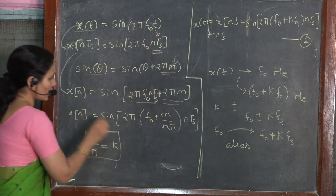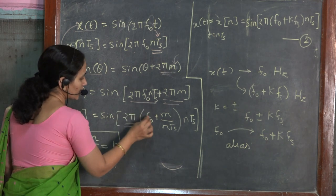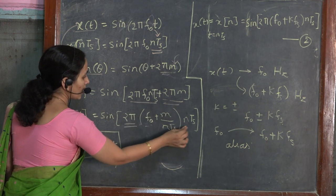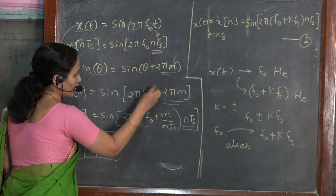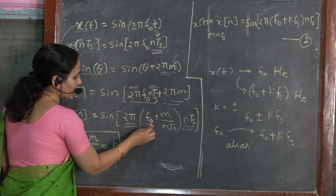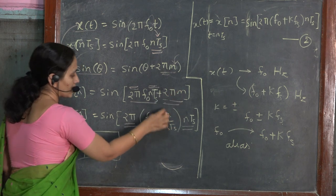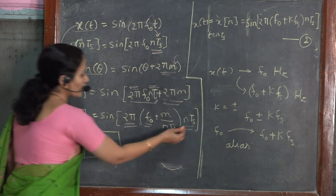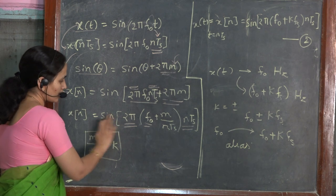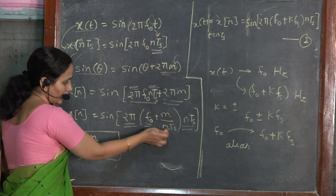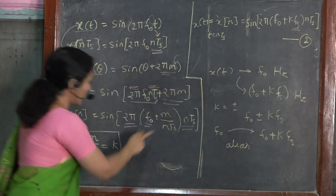Let us rearrange this equation. x of n can be written as sin — taking 2π common, what remains inside is f₀ plus m. At the same time, taking nTs common as well, what remains inside is (f₀ + m) divided by nTs. Since the nTs term was not present before, it has now come into the denominator. Rearranging, we arrive at sin(2π(f₀ + m/n) · (1/Ts)), where 1/Ts can be written as fs, multiplied by nTs.